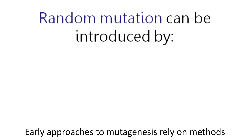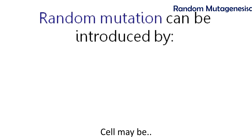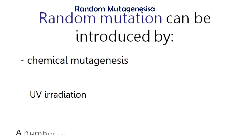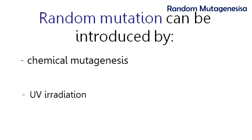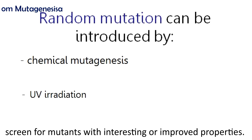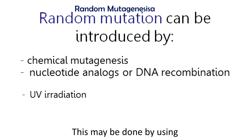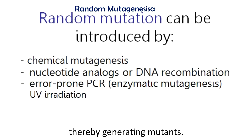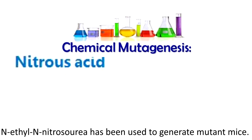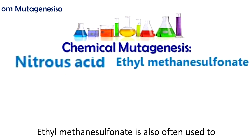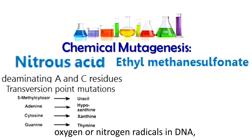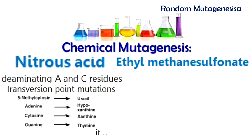Cells may be exposed to UV radiation or mutagenic chemicals, and mutants with desired characteristics are then selected. A number of methods for generating random mutations in specific proteins were later developed to screen for mutants with interesting or improved properties. This may be done by using doped nucleotides in oligonucleotide synthesis, or conducting a PCR reaction in conditions that enhance misincorporation of nucleotides, thereby generating mutants. In animal studies, N-ethyl-N-nitrosourea has been used to generate mutant mice. Ethyl methanesulfonate is also often used to generate animal and plant mutants, and you can transfer its ethyl group to oxygen or nitrogen radicals in DNA, resulting in mispairing and base pair substitution if not repaired.